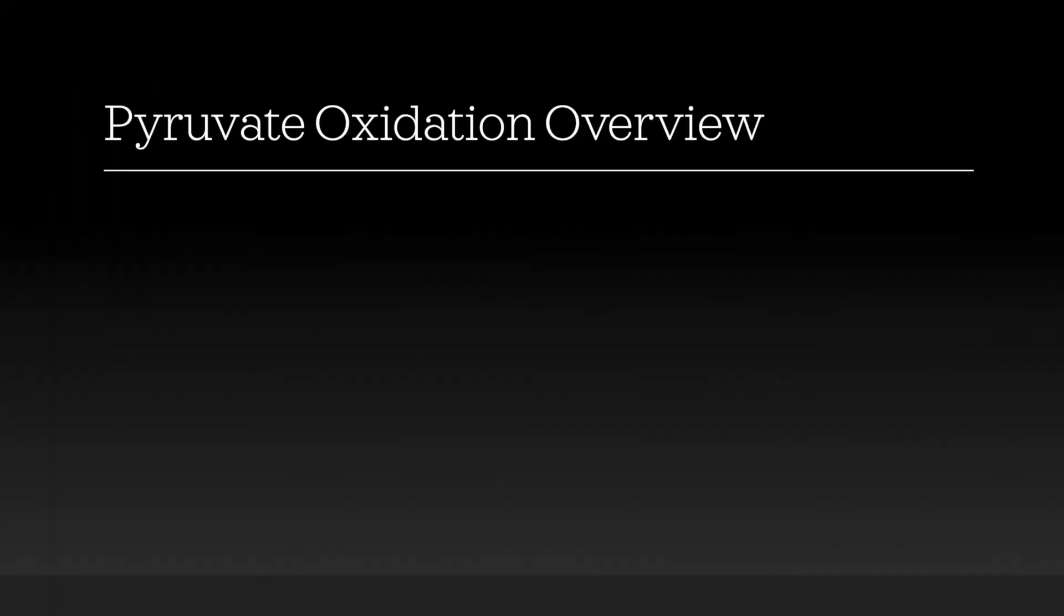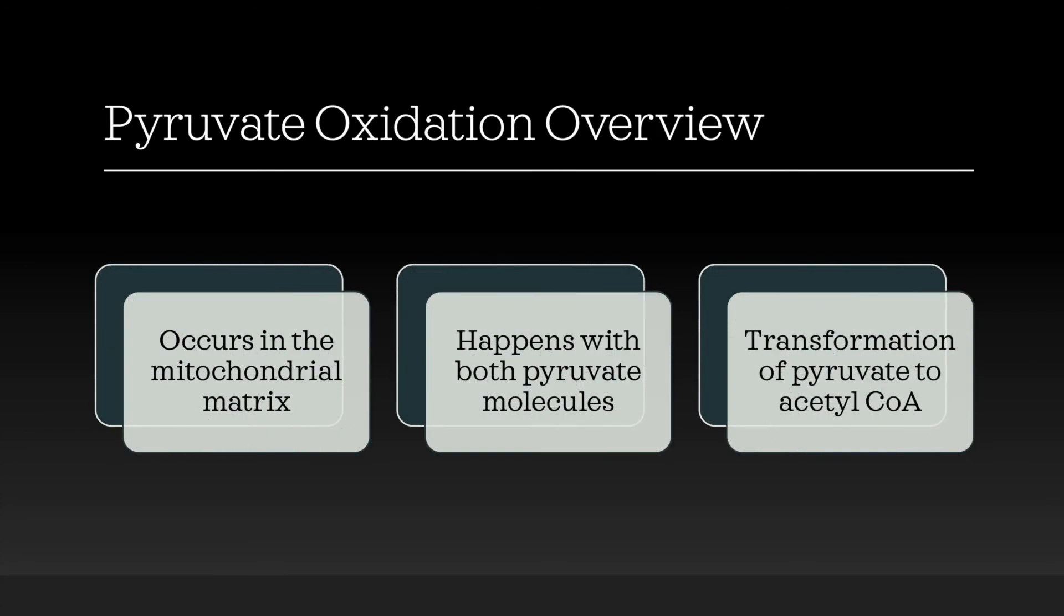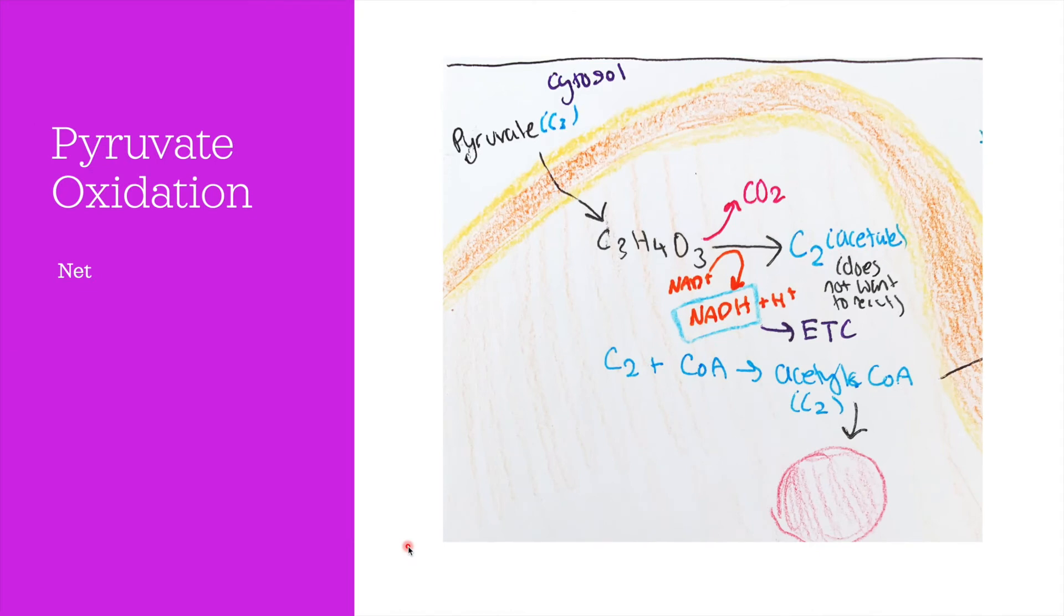Now let's move on to pyruvate oxidation. Pyruvate oxidation occurs in the mitochondrial matrix, and it happens with both pyruvate molecules. Both pyruvate molecules are converted to acetyl-CoA. The process starts as pyruvate enters the mitochondrial matrix from the cytosol. Once it enters, it is converted to acetate, which is a two-carbon compound.